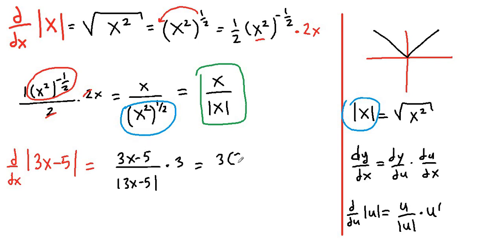So it is 3 times 3x minus 5 over absolute value of 3x minus 5.